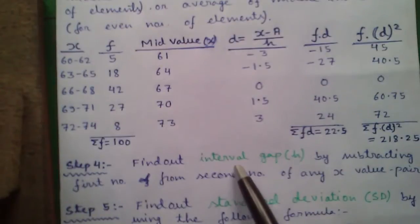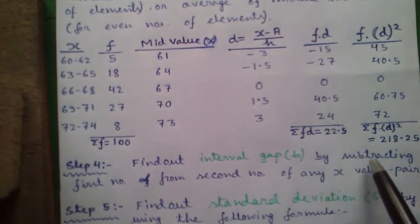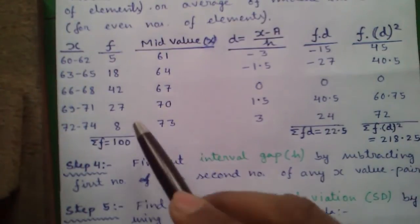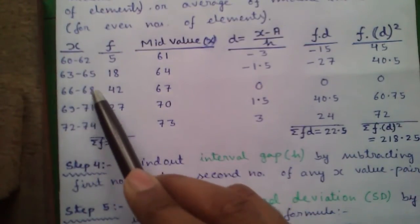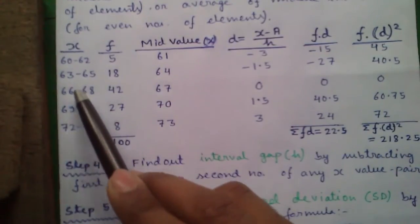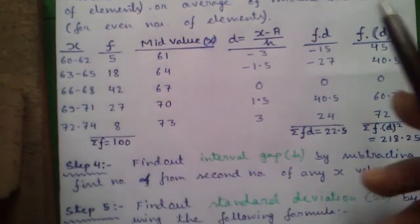Next find out the interval gap or H by subtracting the first number from the second number of any x value pair. That means 66 subtracted from 68 which is 2. So our h is 2. Next construct the table.